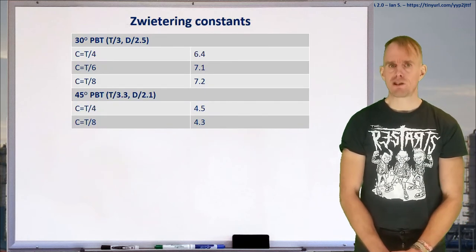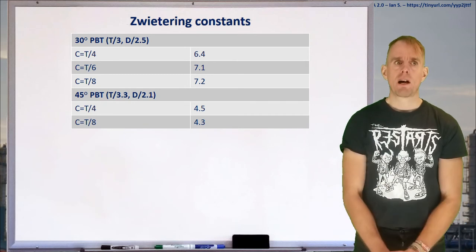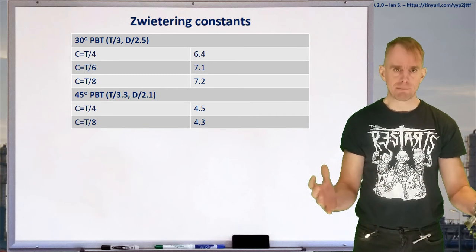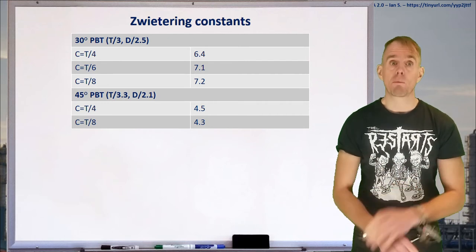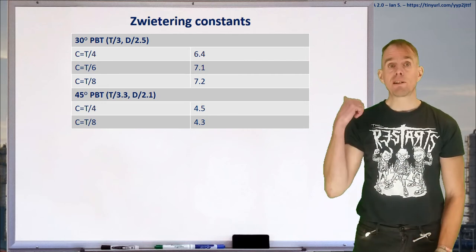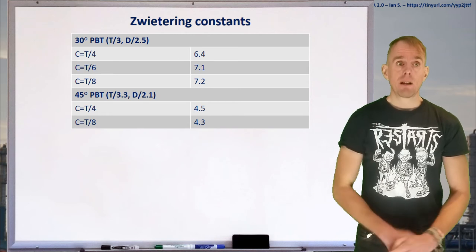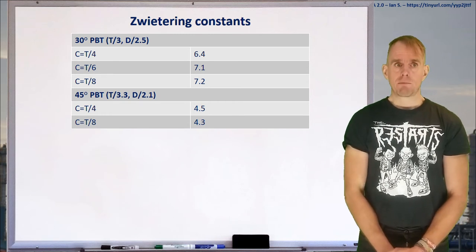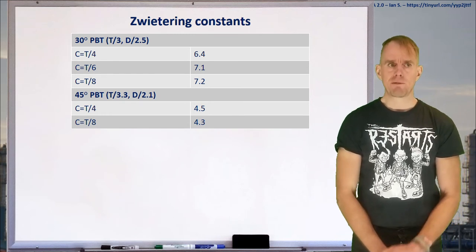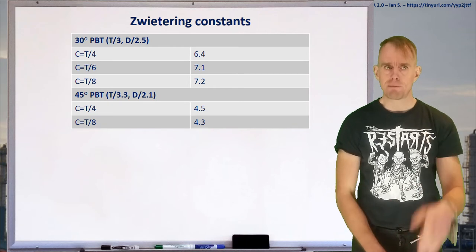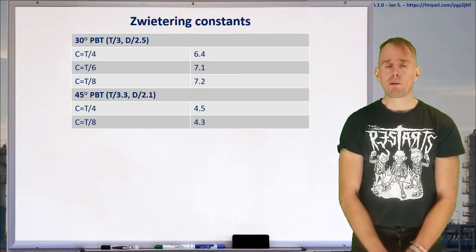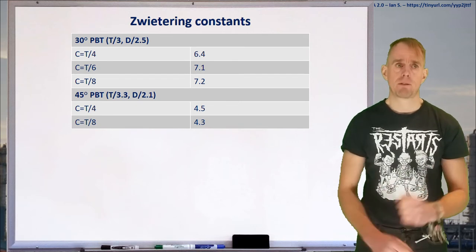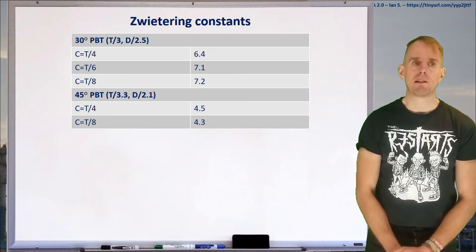I want to look at the tables of data that are often used to give values of S, because they sometimes need a little bit of interpretation. In your notes, I've put a far greater range of data. It's impractical to show that on a screen and doesn't actually illustrate what I want to illustrate to you now, which is how to interpret these data. So, at first sight, these may seem a little baffling. 45 degree, PBT, T over 3.3, D over 2.1, C equals 2.4, S equals 4.5. What on earth does that mean? Let's take it apart piece by piece.